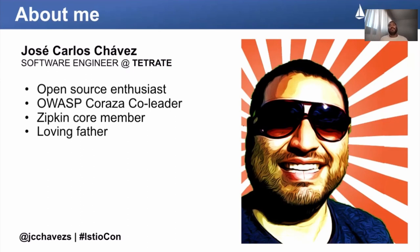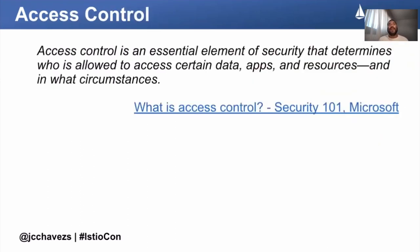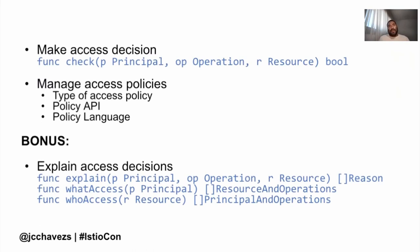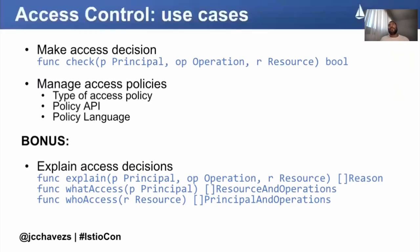Let's start by defining access control. According to Microsoft's Security 101, access control is an essential element of security that determines who is allowed or not to access certain data, apps, and resources in general, and under what circumstances — basically the context. When we talk about access control, we talk about a couple of cases: first, making an access decision.